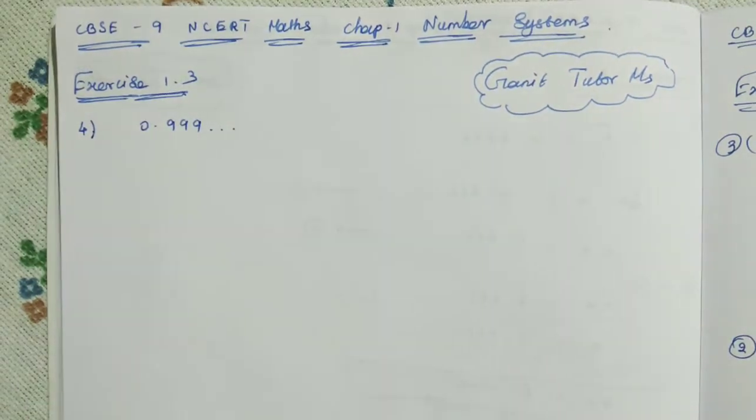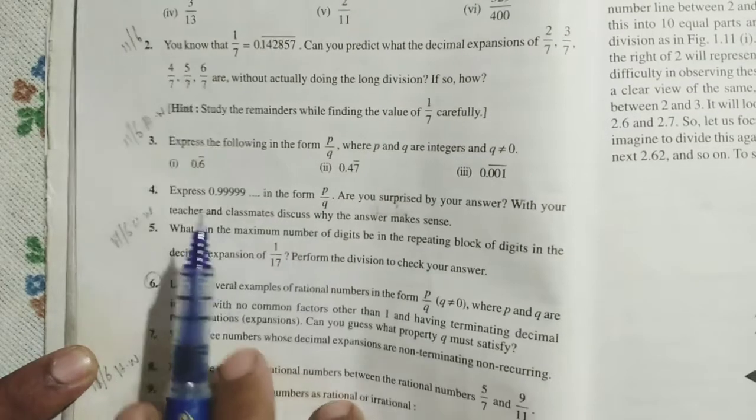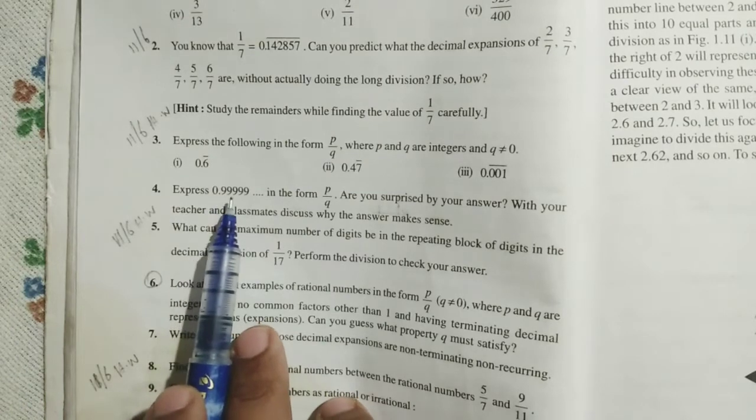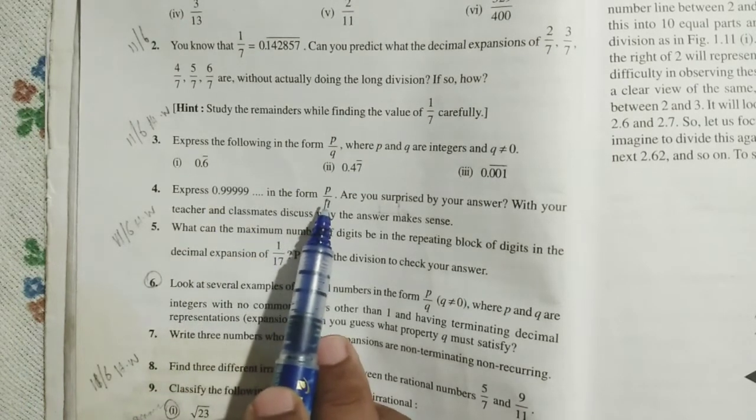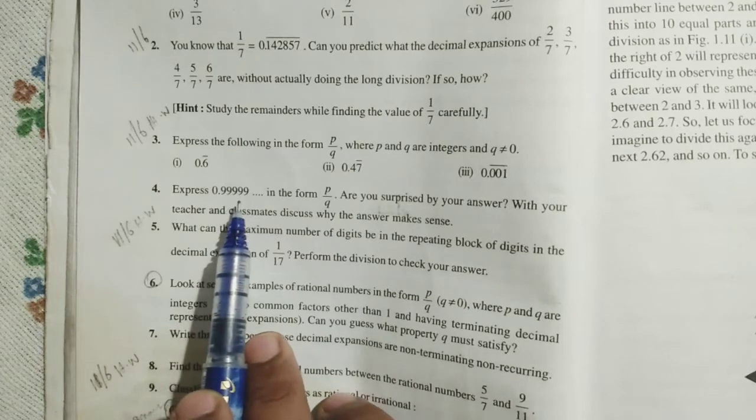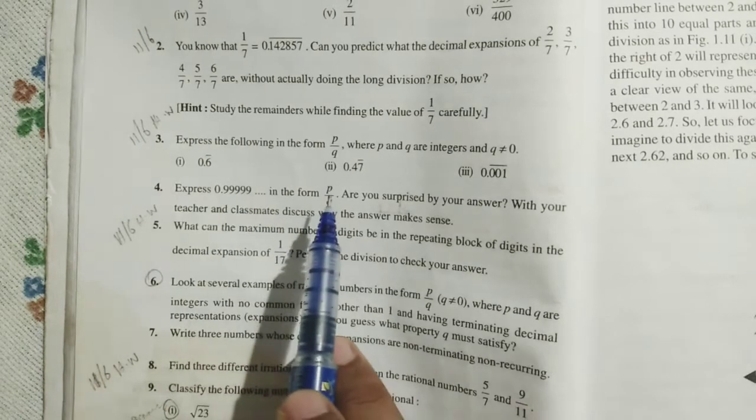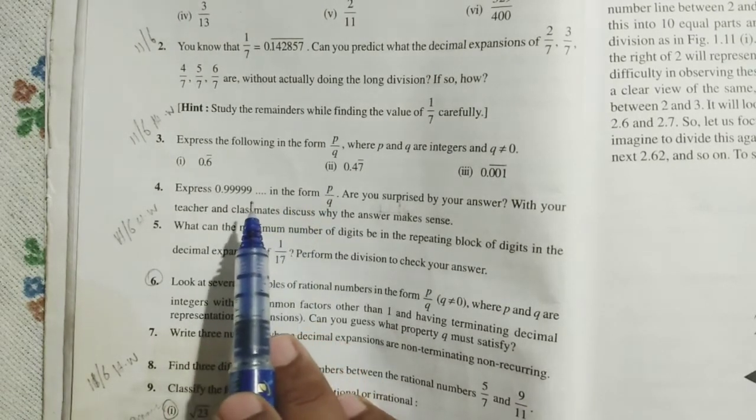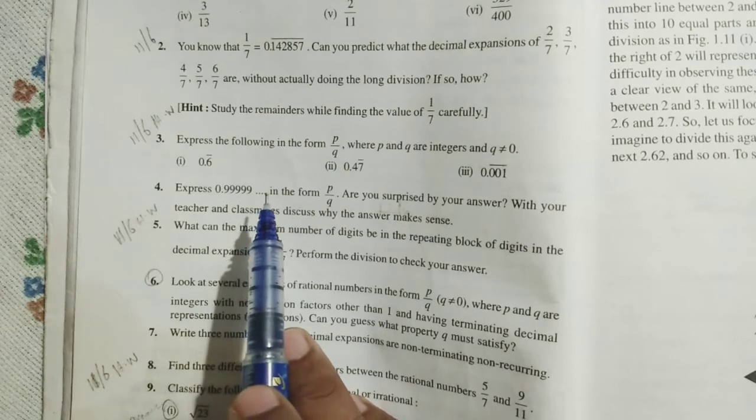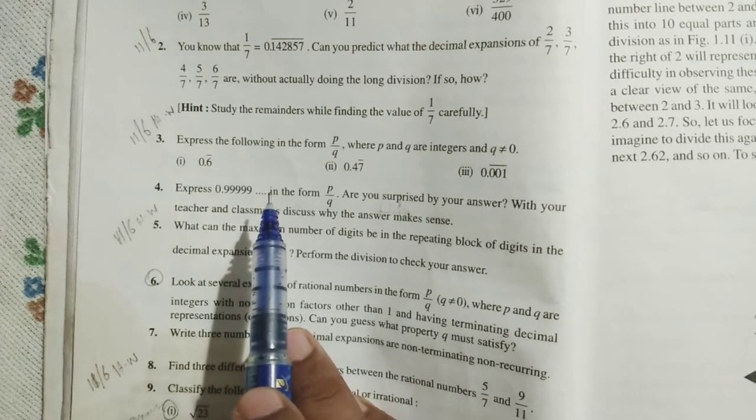What are they given in this problem? Express 0.999, etc. in the form P by Q. So, they given the decimal expansion, we should convert the decimal expansion into P by Q form. What kind of decimal expansion is it? It is non-terminating and recurring.